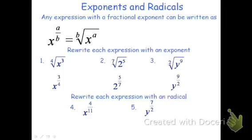So we're going to take the 11th root of x to the 4th. On number 5, we have y to the 7 halves, so we'll take the 2nd root of y to the 7. We typically do not write a 2nd root — the 2nd root is the only one that does not get the index written, and that's just written as the square root. So better to write the square root of y to the 7th.